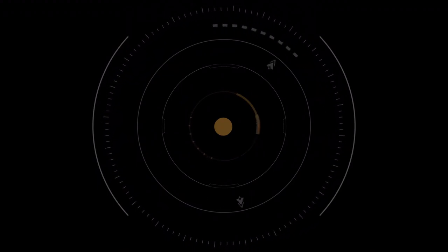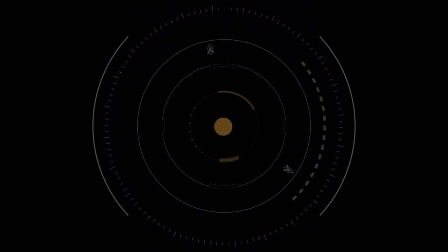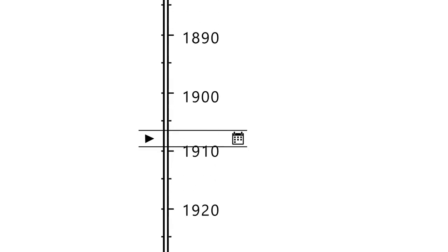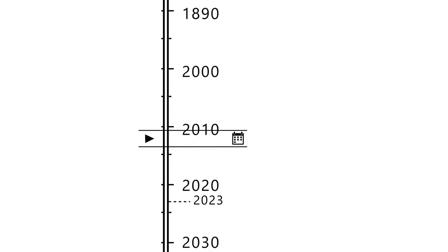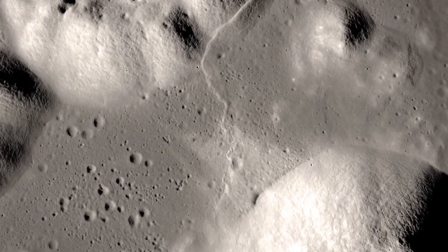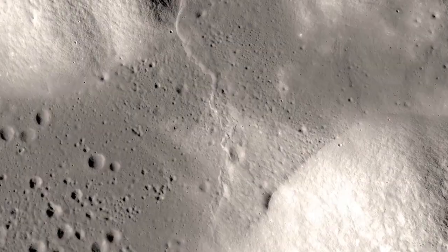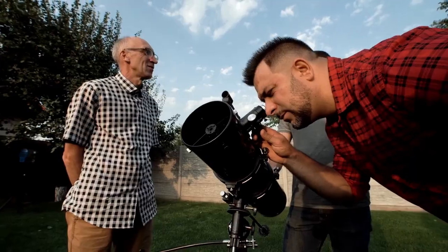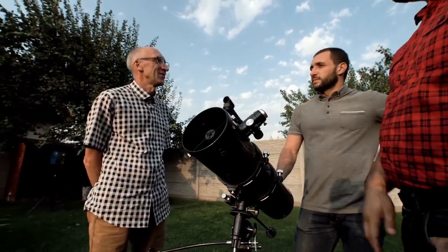Pluto, for years, was considered a desolate, frozen world on the fringe of our solar system. It seemed like a place too distant and too cold to have any significant features, much less something as unexpected as life. But that perception is quickly changing thanks to groundbreaking discoveries made by the James Webb Space Telescope.